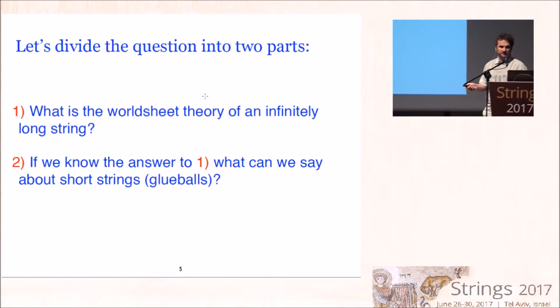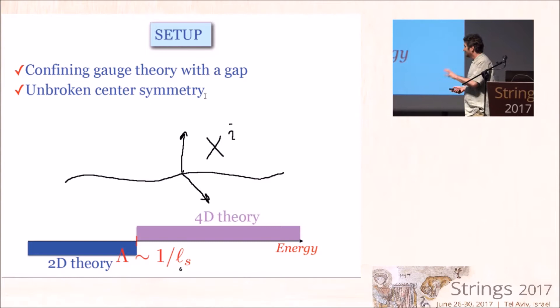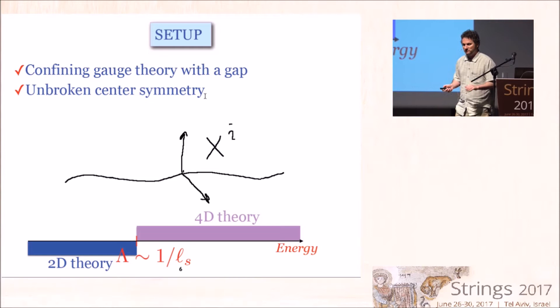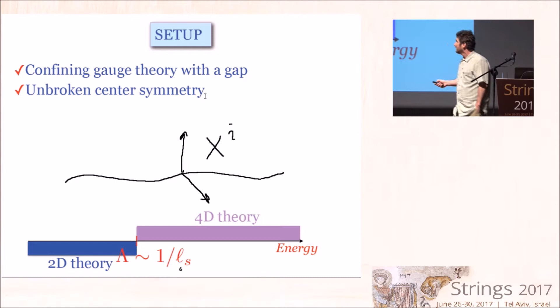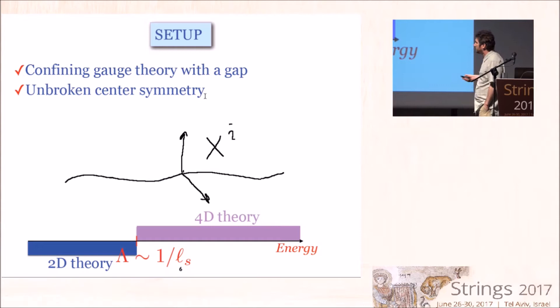To be more precise about what I mean by worldsheet theory: start with pure glue dynamics, which is a confining theory with a gap and unbroken center symmetry. Consider a background where there is an infinitely long flux tube created by an infinitely long Wilson line stretching through all of spacetime. In such a background, at low energies below the gap, all excitations are localized on the string, so I'm dealing with an effective two-dimensional theory with a cutoff set by the inverse tension of the string.